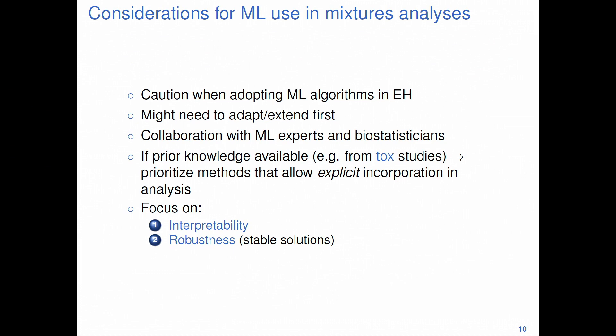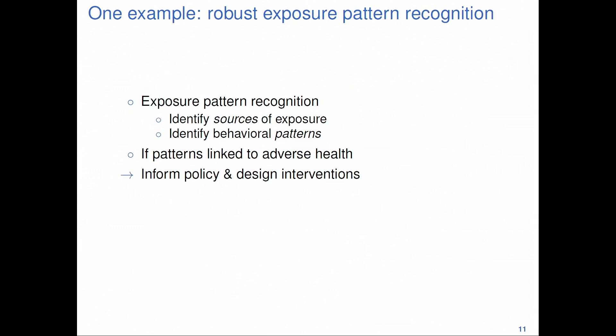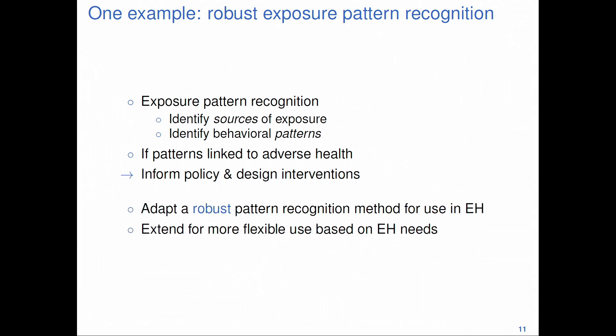I will go over one example of using machine learning in environmental health: robust exposure pattern recognition. Exposure pattern recognition is one of the potential research questions we might have. If we identify sources of exposure or common behavior patterns in our study population, and subsequently in health analysis identify the harmful sources or behaviors, that can help inform policy and design interventions.